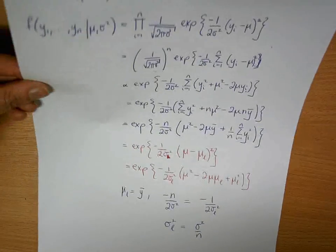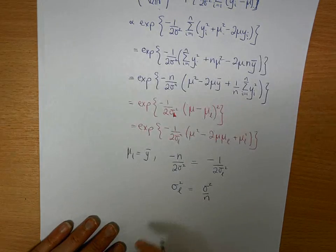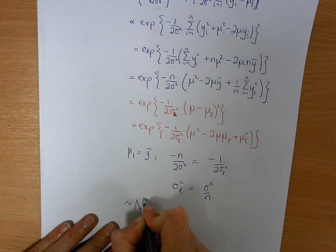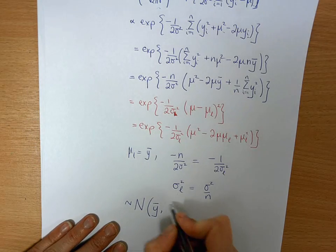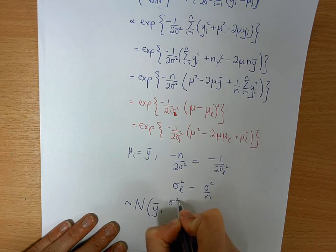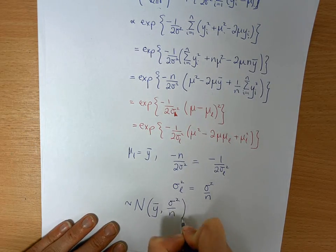So therefore, our likelihood is normally distributed, mean of y bar, and a variance of sigma squared over n.